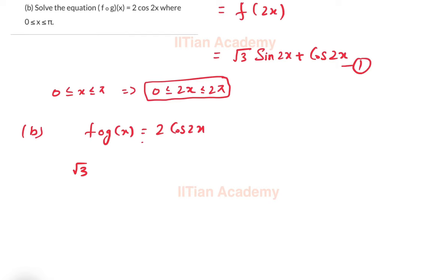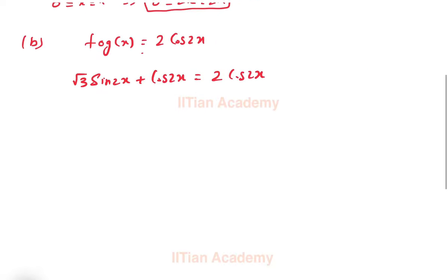So f(g(x)) we identified as √3 sin 2x + cos 2x = 2 cos 2x. We can simplify this: √3 sin 2x = cos 2x. Dividing by cos 2x we get tan 2x = 1/√3.